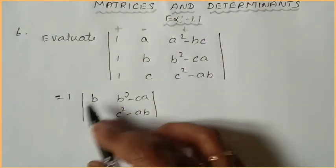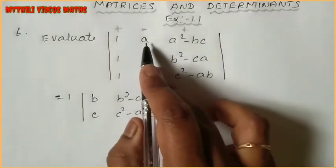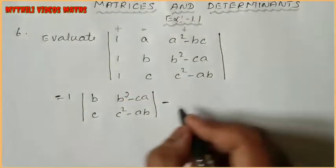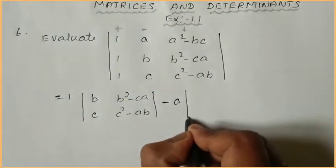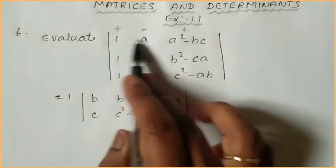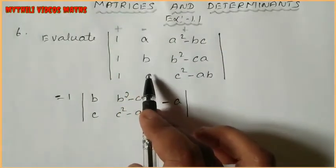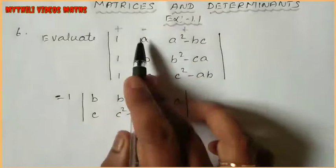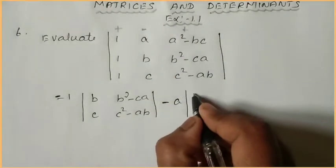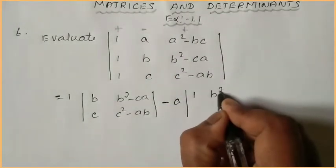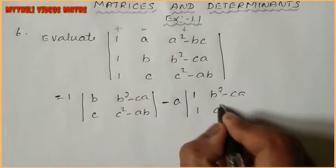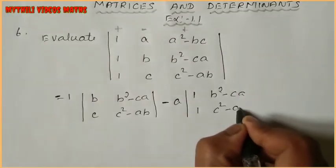When you expand the first term, after that in the second term it is minus. So minus in the values. When you determine the determinant form, this row and column — when the first row, second column goes, the remaining elements are: 1, (b²-ca), and then 1, (c²-ab).